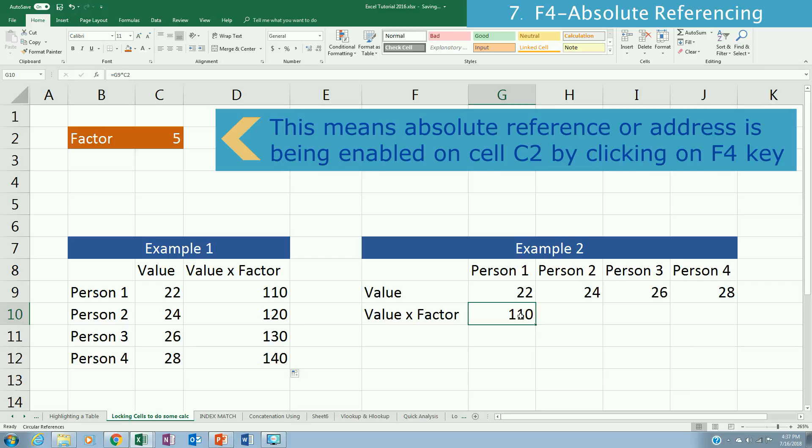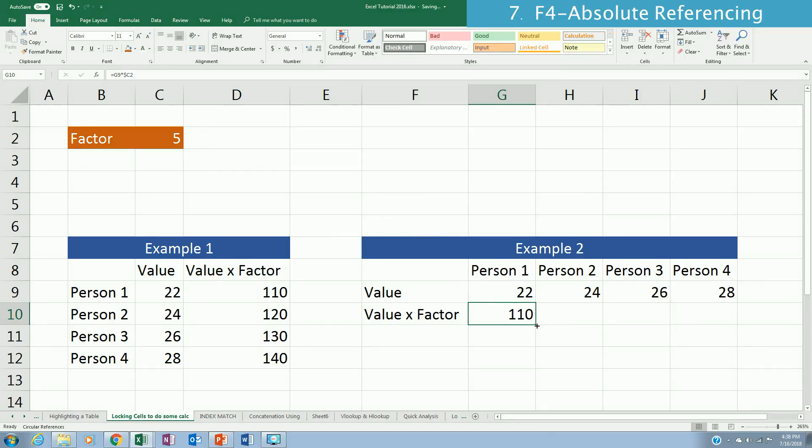So in this case, if we click on F2 and then go to the formula again, click on F4, that's the first one. It's fixing the column and fixing the row. Another F4 again, that's fixing the row. And another F4 again, and then that's fixing the column. So if you enter that and then copy this one to your right.